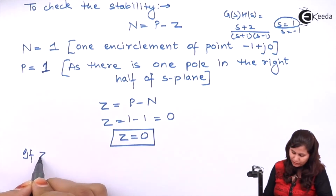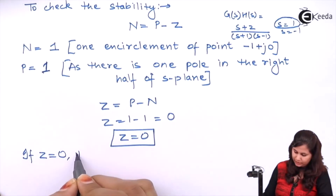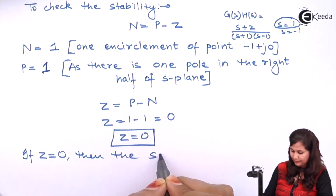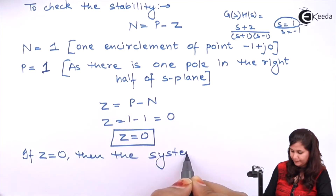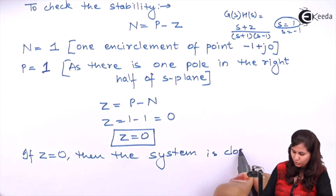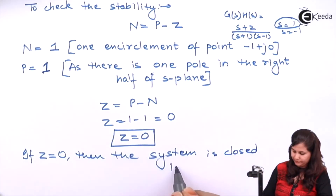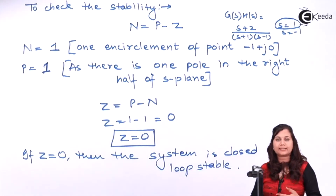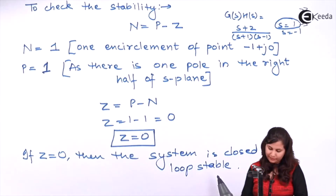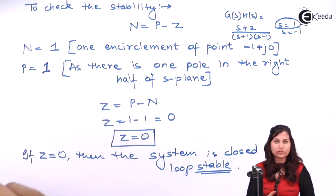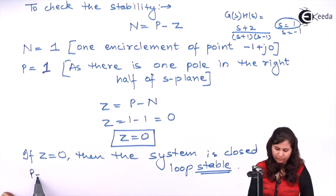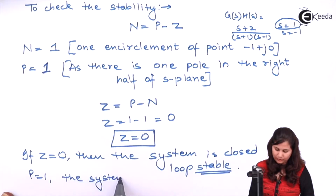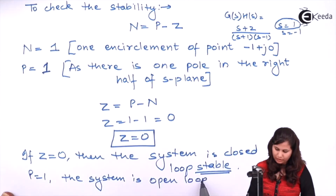Since Z = 0, the system is closed loop stable. However, since P = 1 (there is one open loop pole in the right-half plane), the system is open loop unstable.